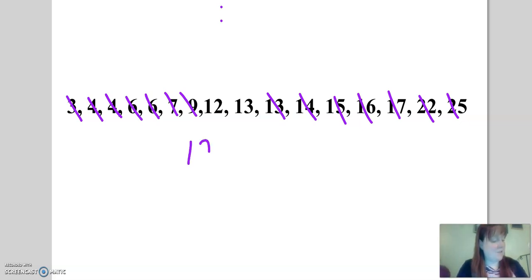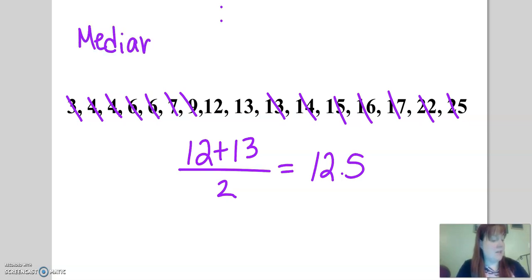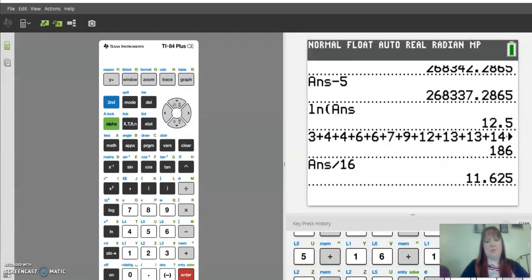I have to add those two together and divide by two. So I have to find the average of those two, which is 12.5. So the median of this one is 12.5. We figured the mean was 11 and some change, can't remember the change, 0.625.